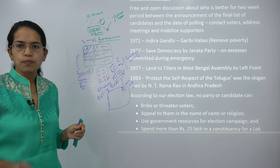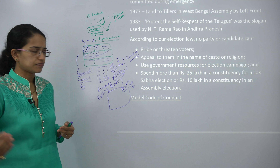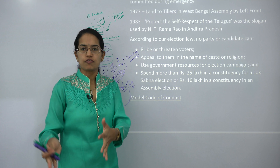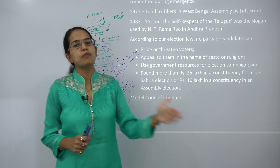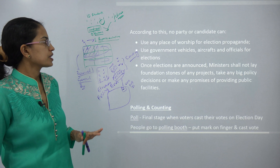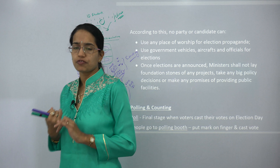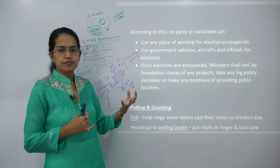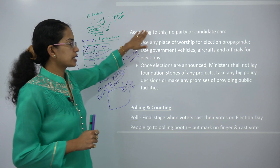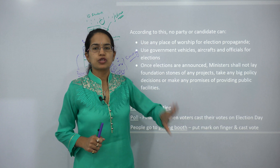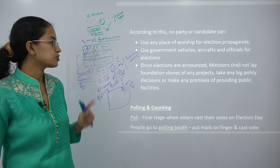According to election laws, no party can bribe a voter, appeal to voters in the name of a specific caste or religion, use government resources for campaigning, or spend more than 25 lakhs for Lok Sabha and 10 lakhs for assembly elections. If any of these violations are found, the candidate's name is removed from the list. Under the model code of conduct, no place of worship can be used for party agenda, government vehicles cannot be used for campaigning, and once election dates are announced, ministers cannot lay foundation stones for projects or release major policies that could influence voters.